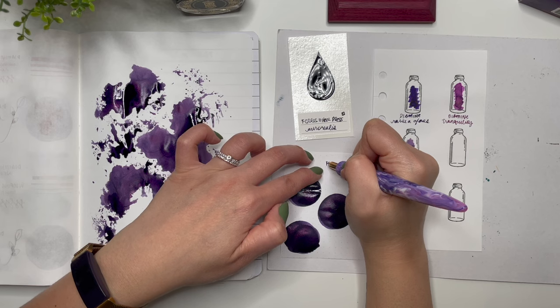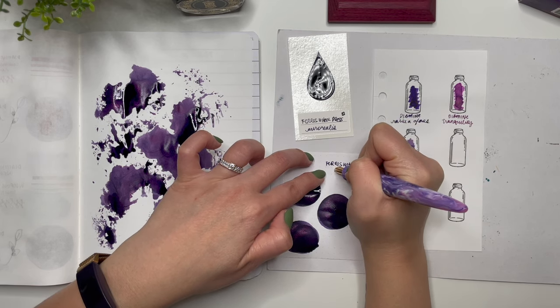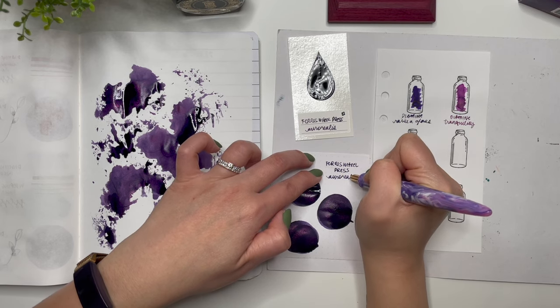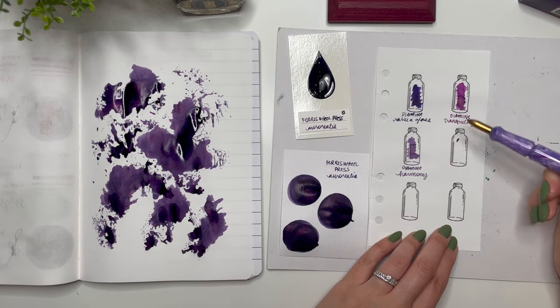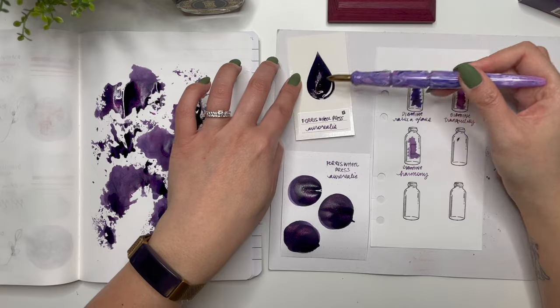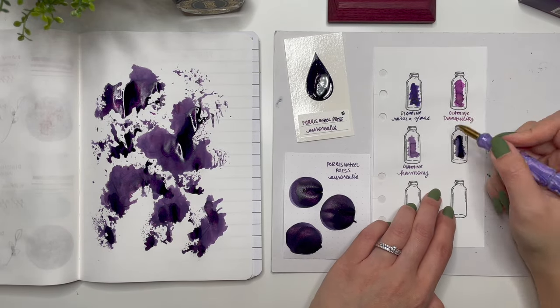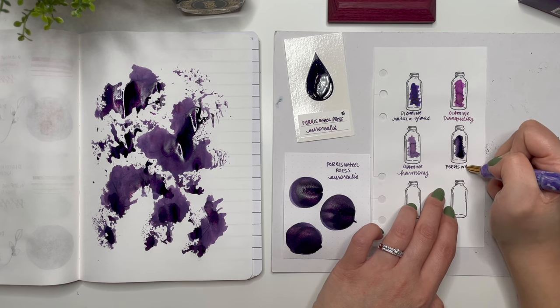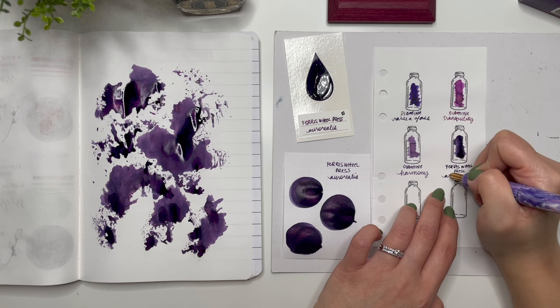So Ferris Wheel Press—I am liking the way that it is drying already. It's a really gorgeous purple with a lilac base. I'm gonna grab some from here, and then that shimmer—stunning.